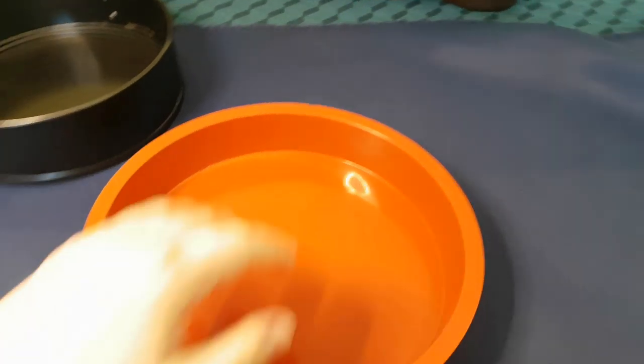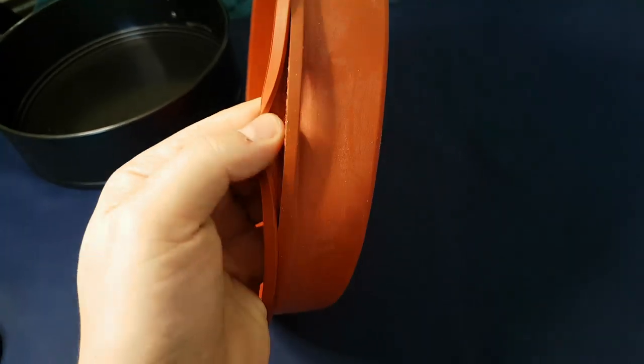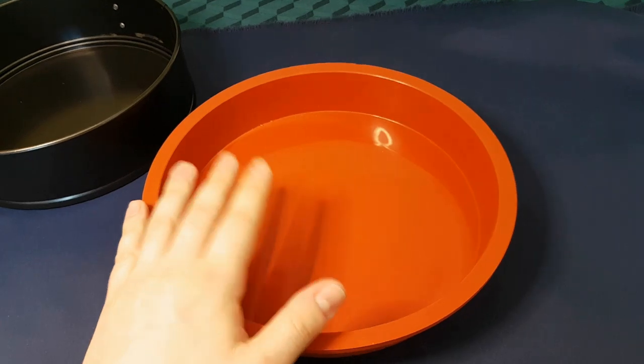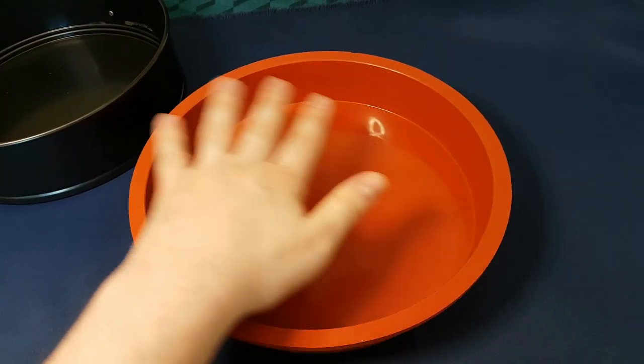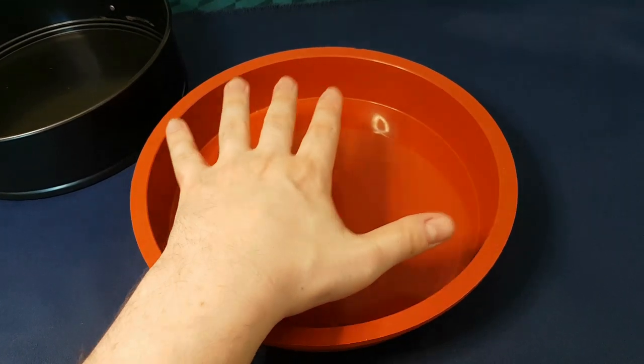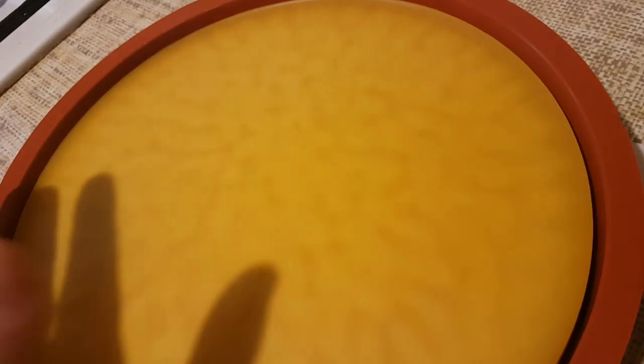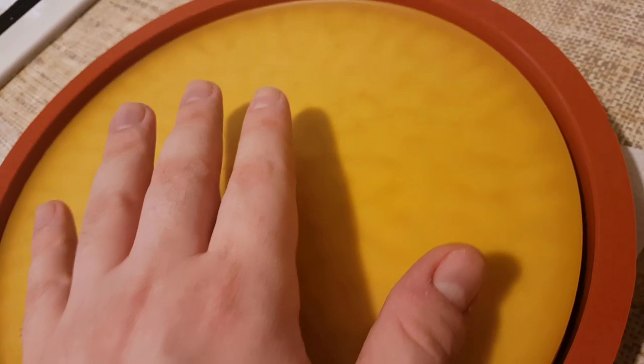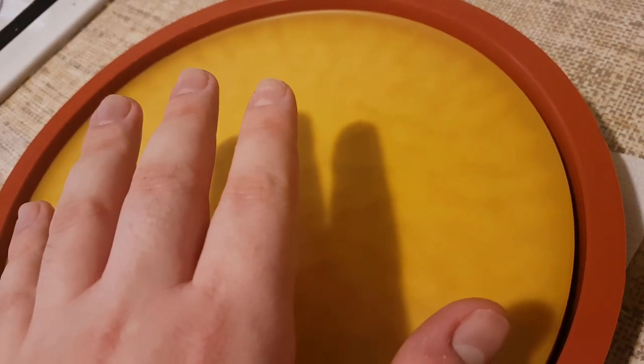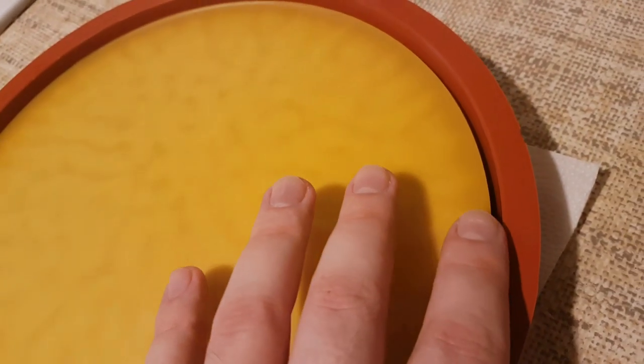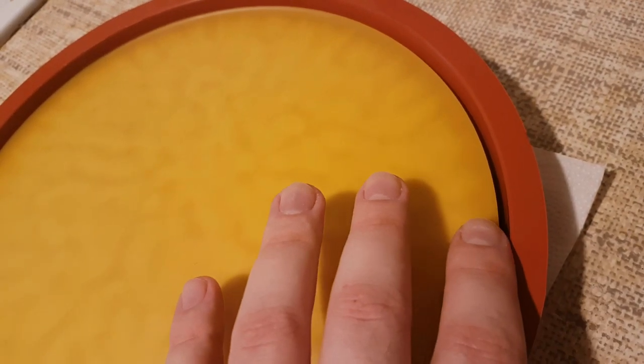So I then went ahead and bought this, just a one-piece silicon cake mold. And there's this hard plastic ring that goes around it to make sure that it doesn't lose its shape, which is a great idea. It's 25 centimeters across, which is slightly larger than what's required. However, the wheel shrinks as it dries and condenses, and so you normally end up with about five millimeters on either side.